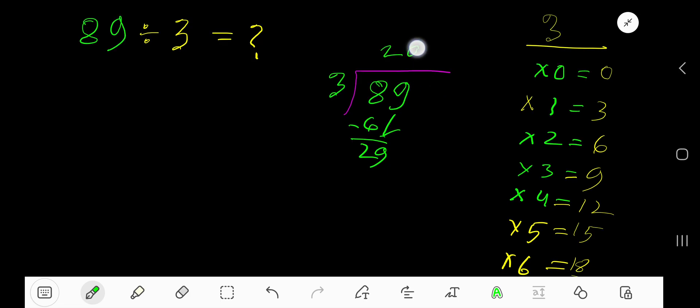9 times 3 is 27. Subtract. 2. Our remainder is 2.